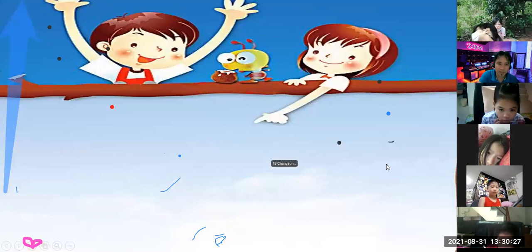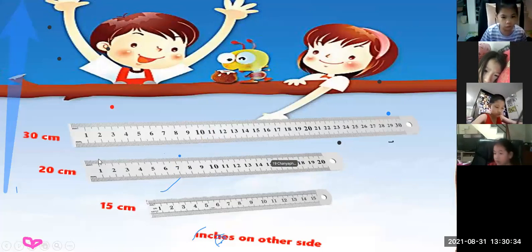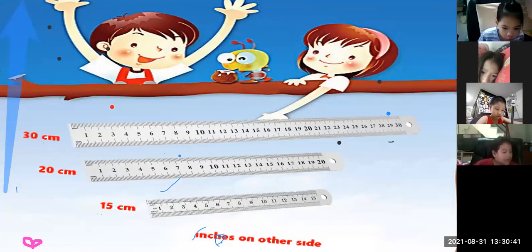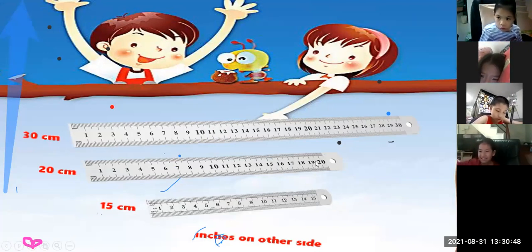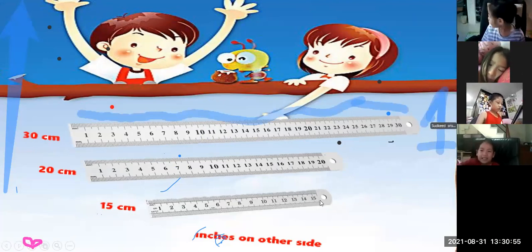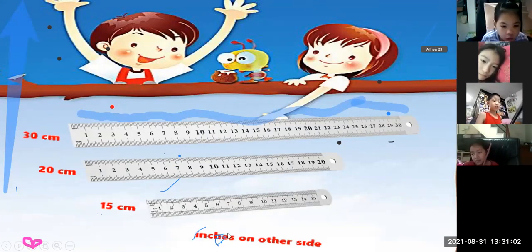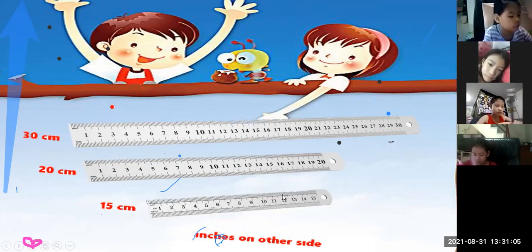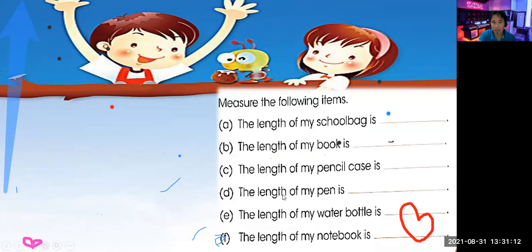Rulers come in different sizes: some are 30 cm, some are 20 cm, some are 15 cm. One side is measured in centimeters and the other side in inches. For measuring long objects we use a meter stick, and for short objects we use a centimeter ruler.